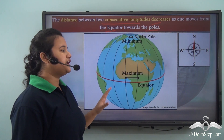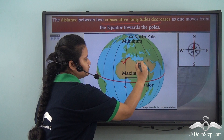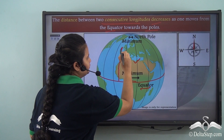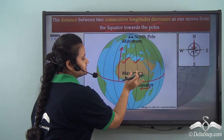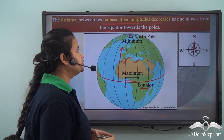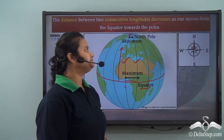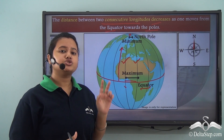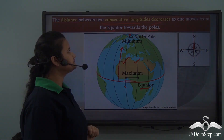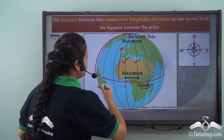To understand this, carefully study the picture. The gap or the distance between two consecutive longitudes is greatest or maximum at the equator. As we move towards the poles from the equator, the distance gradually decreases, and at the poles, the longitudes actually converge or meet. So the distance between two consecutive longitudes at the poles is zero — maximum at the equator and minimum at the poles. The distance between two consecutive longitudes varies due to the spherical shape of the earth.